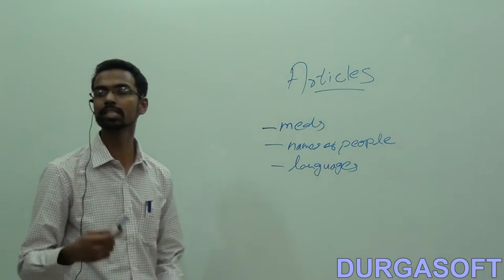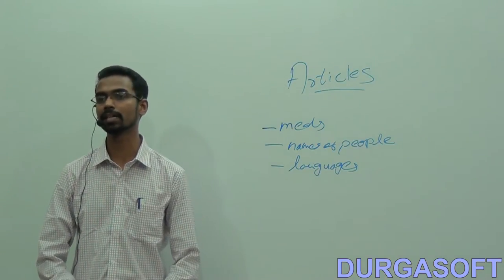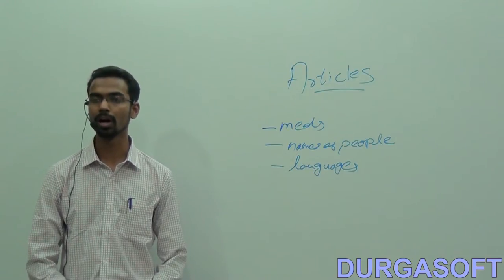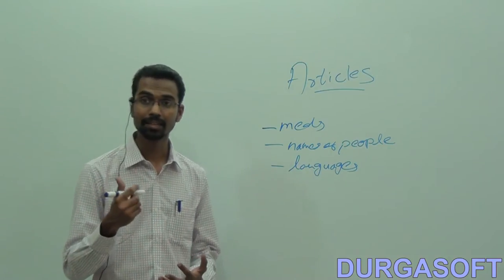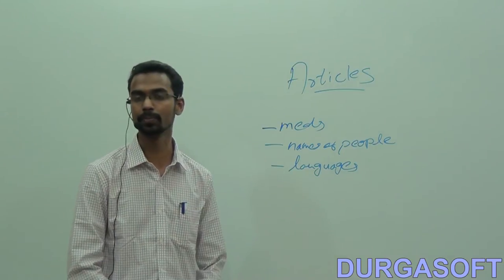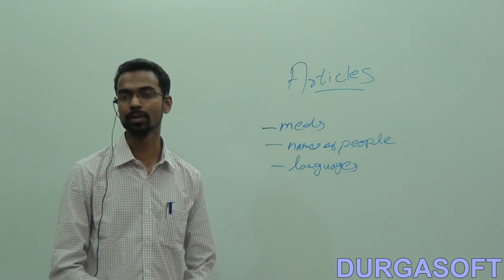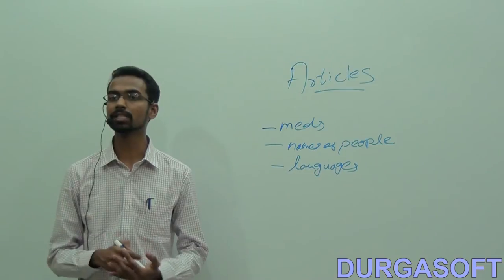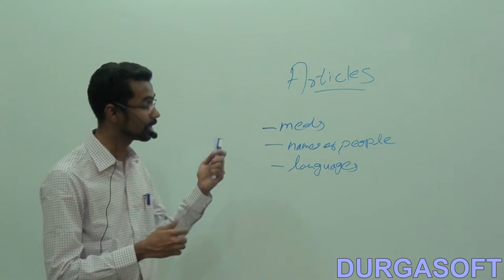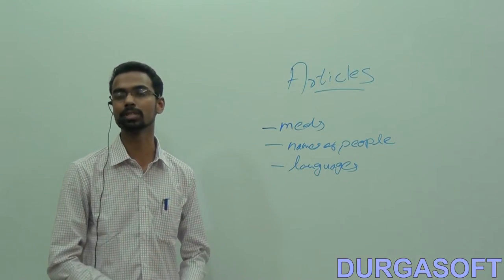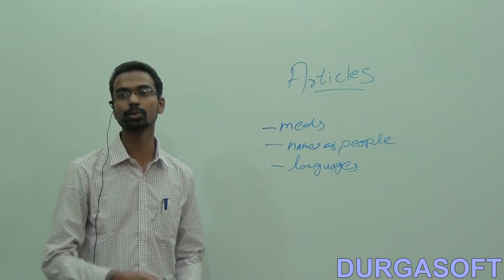We find that we don't use the definite article before the names of meals. We don't say, I had the breakfast at 8 am this morning. Or I don't say, will you come to my house for the lunch? No. But then there is again an exception to this rule. You can say the breakfast or the lunch or the dinner when you are being specific. For example, you can say, the breakfast which we had at the Rajadani hotel was not good. There you are being specific about a particular breakfast. In that case, the usage of the definite article is allowed. But otherwise, when you are talking about breakfast, dinner or lunch in a general sense, you don't use any article.